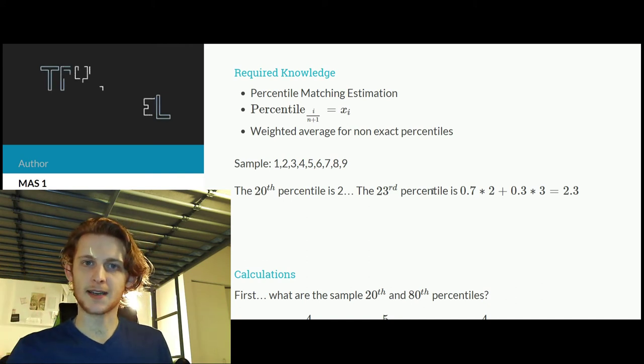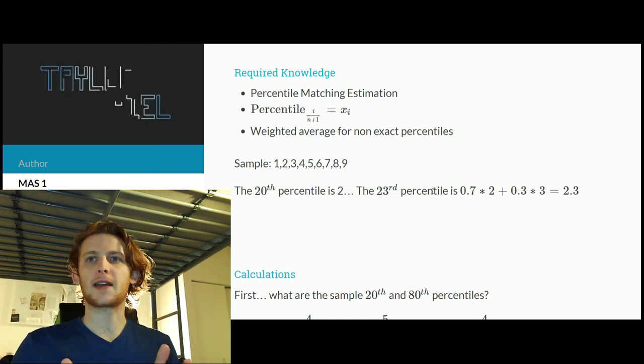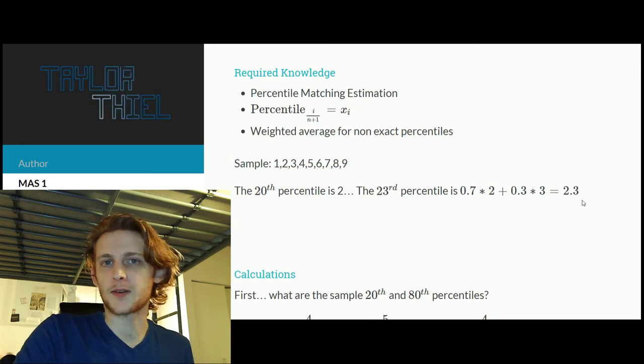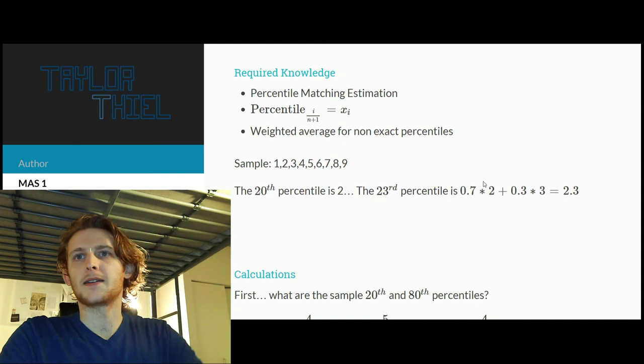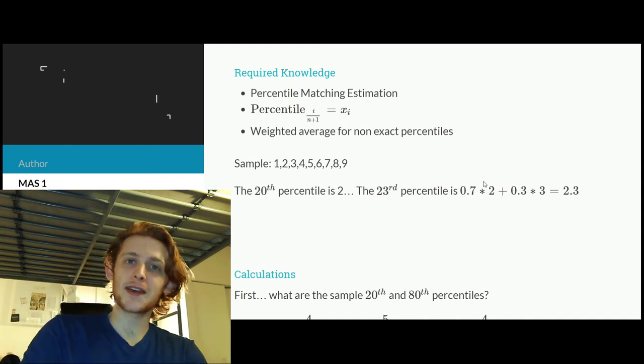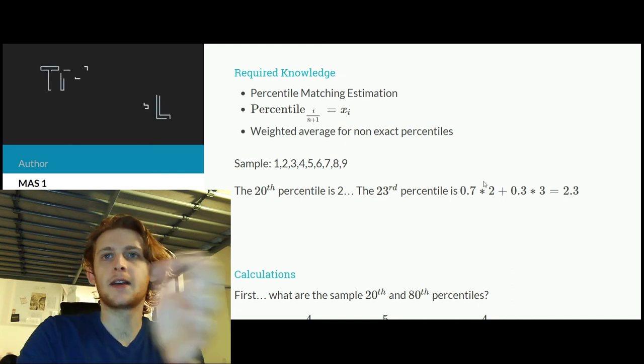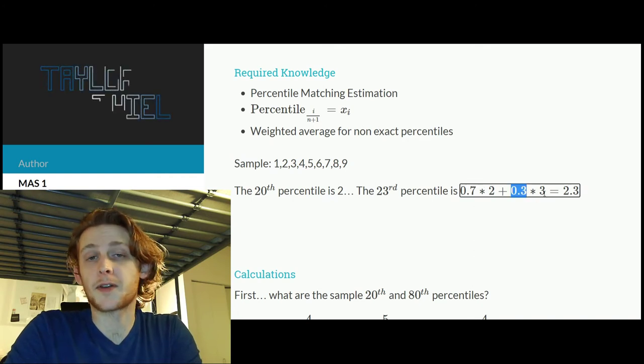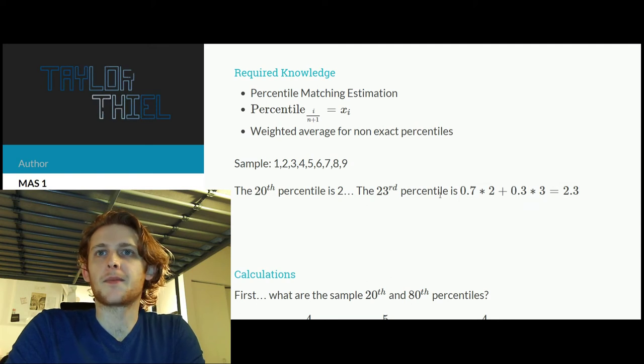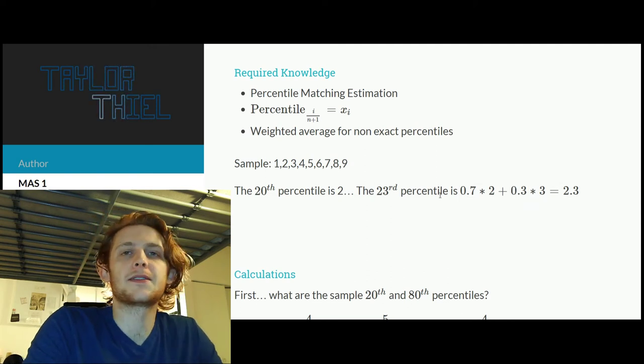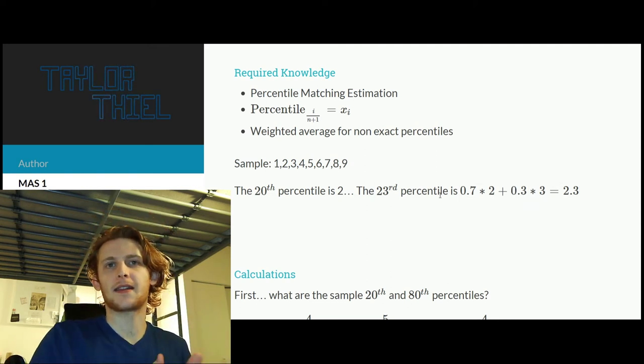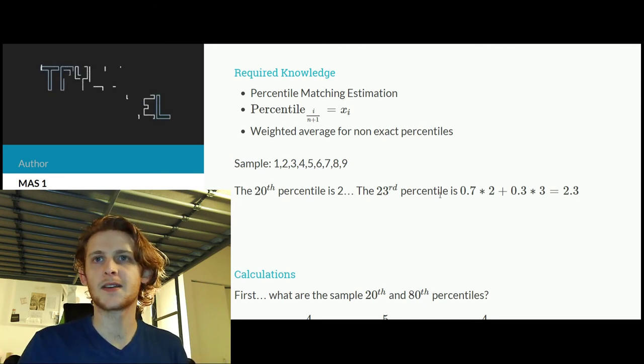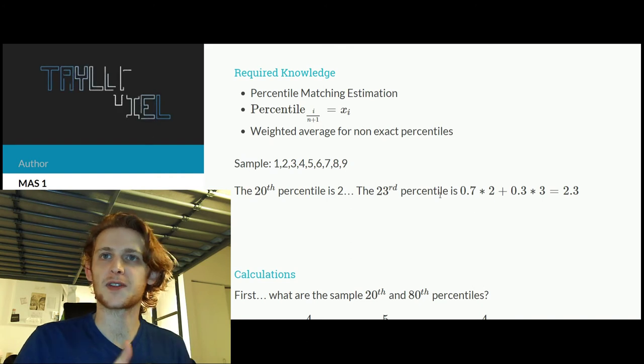However, if I asked for the 23rd percentile, I would say that is surrounded by the 20th percentile and the 30th percentile, and then give them the weighting that then corresponds to the 23rd percentile. So 70% goes to the 20th because it's closer to 23, and then the remaining 30% of weight is going to go to the 3rd or the 30th percentile.